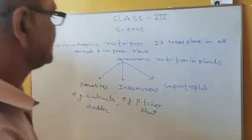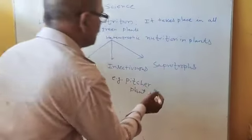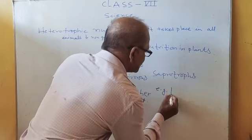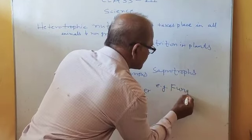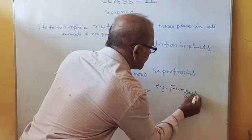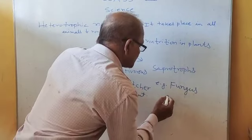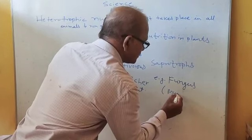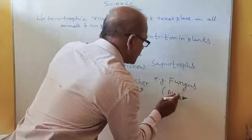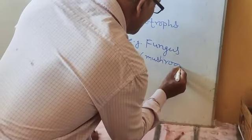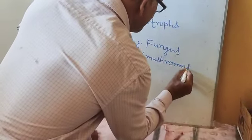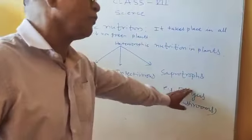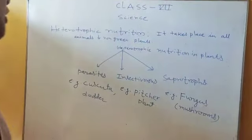The examples of saprotrophic plants are fungus and mushroom. Mushroom is one of the best examples of saprotrophic plants.